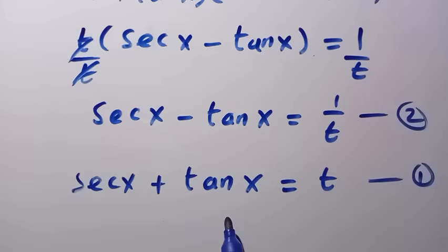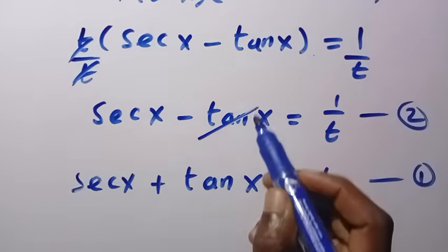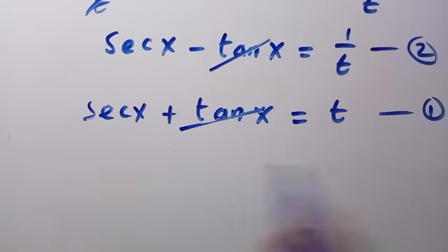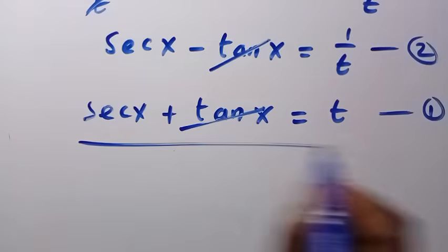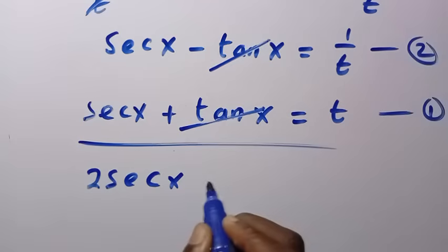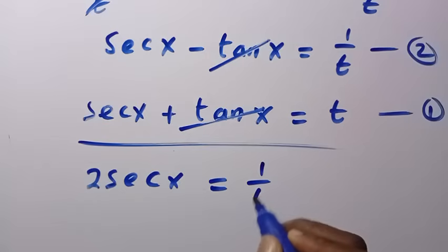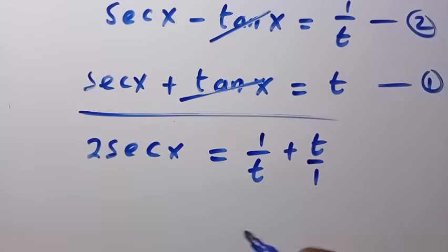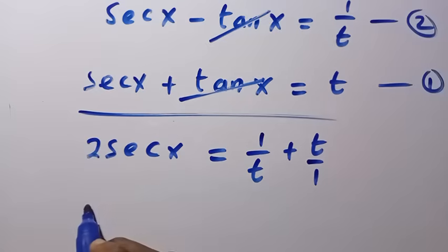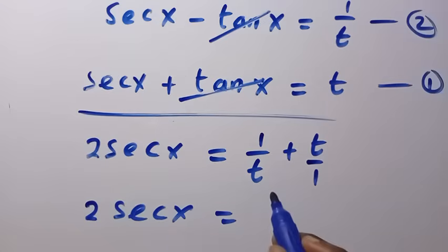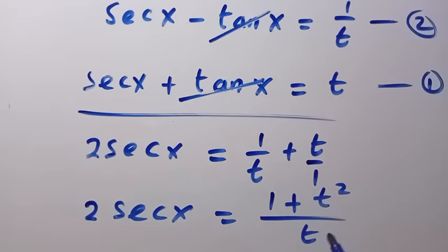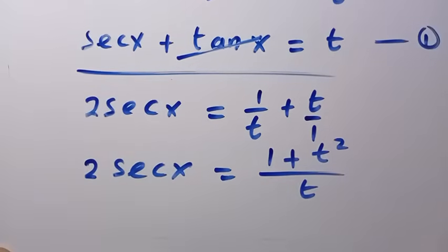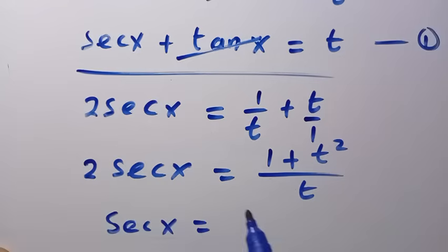Adding Equation 1 and Equation 2 together, the tan x terms cancel. So sec x plus sec x gives 2 sec x equals 1 over t plus t. Finding the common denominator, we get 2 sec x equals 1 plus t squared divided by t. Dividing both sides by 2, sec x equals (1 plus t squared) divided by 2t.